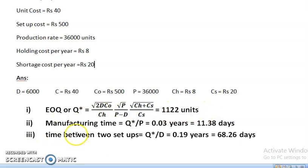The second question is manufacturing time. The equation is Q optimal divided by P, where P means production rate. The final answer is 0.03 years, which when converted into days is 11.38 days.